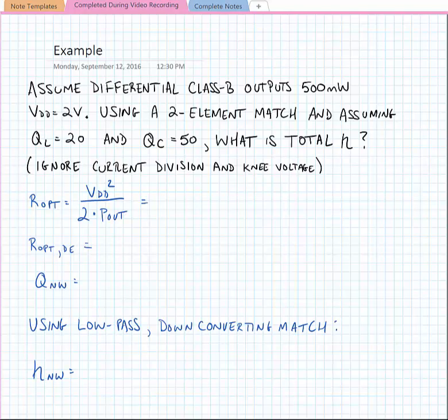So we know from our prior example of a class A amplifier that our R_OPT is equal to V_DD squared over 2 times P_out. And this is also true for a class B power amplifier. This means that our optimum termination resistance is 4 ohms. And this would be for a single-ended power amplifier.